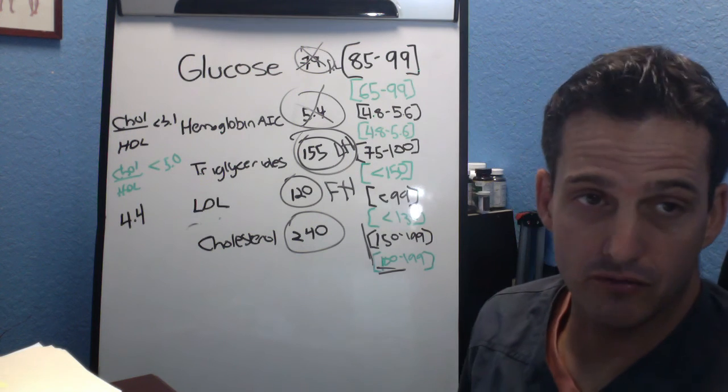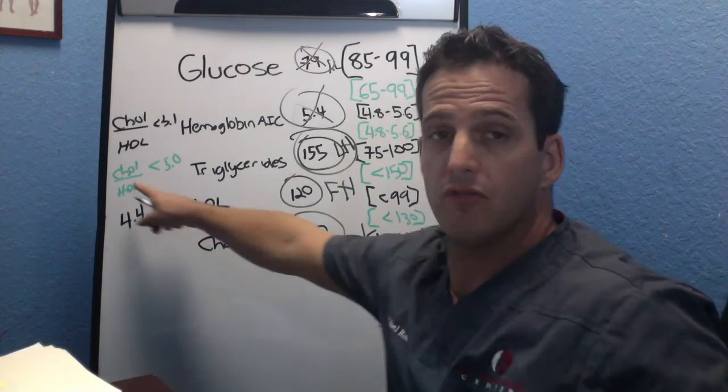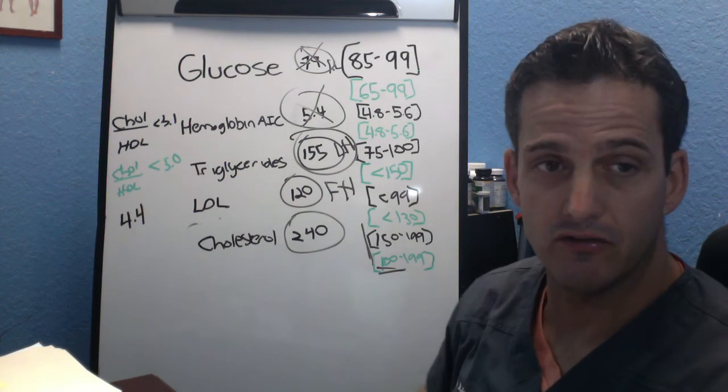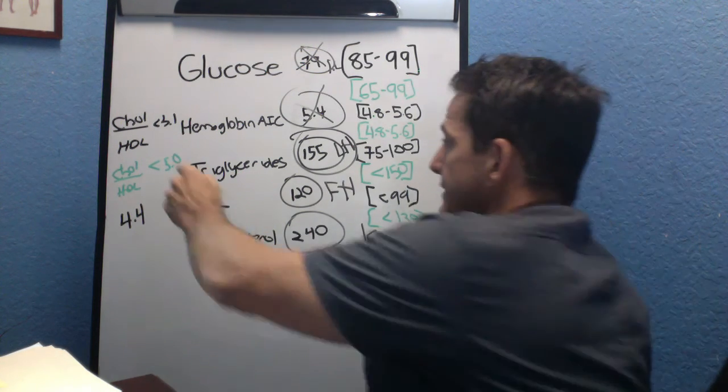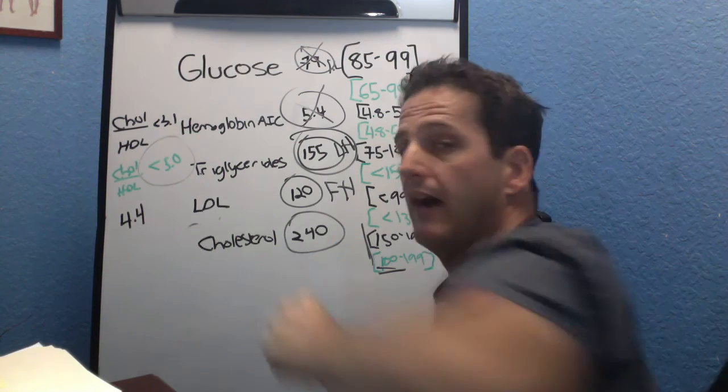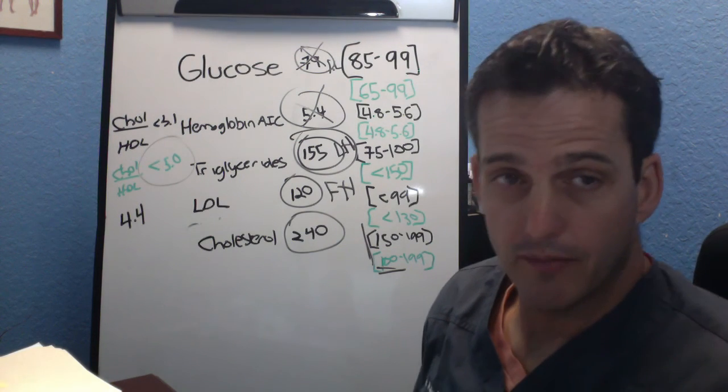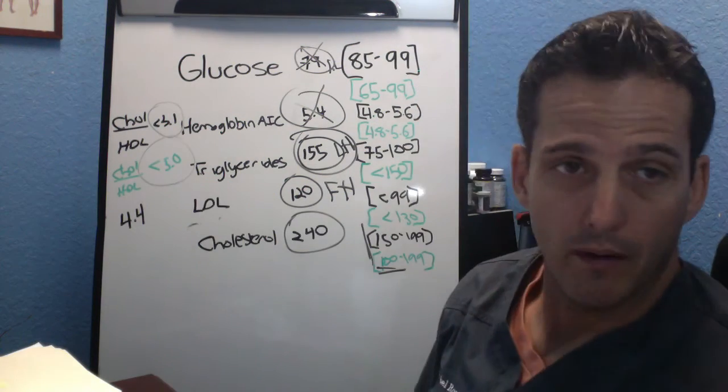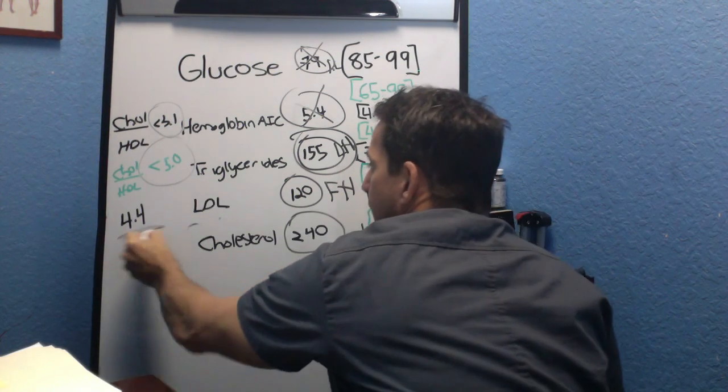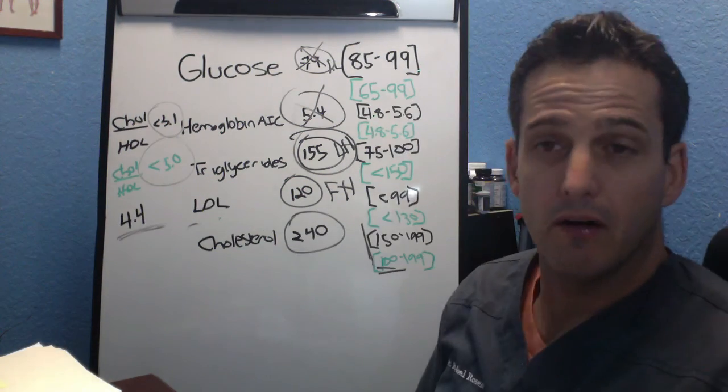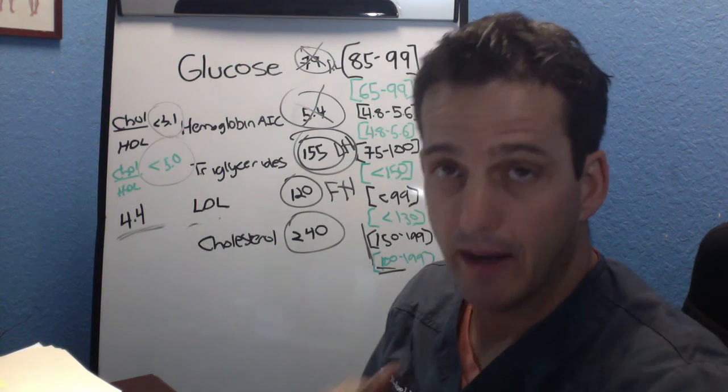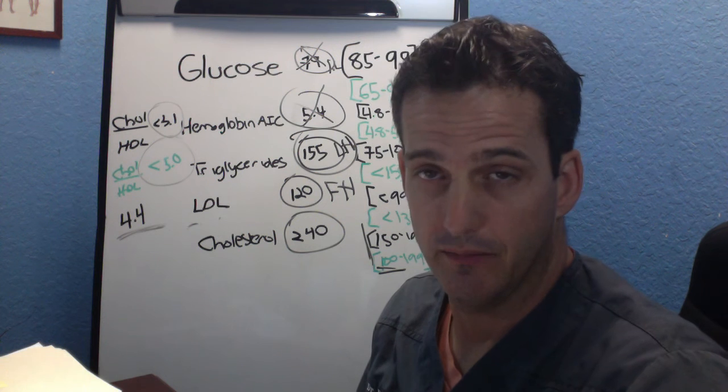But here's where it really is driven home is at the cholesterol and HDL levels. So when we're looking at the ratio from cholesterol to HDL on a lab test it says you should be below 5.0. However from a functional range it should be below 3.1. In this case it was 4.4. Which means their cholesterol to their healthy cholesterol is way too high. That is a sure sign of insulin resistance.